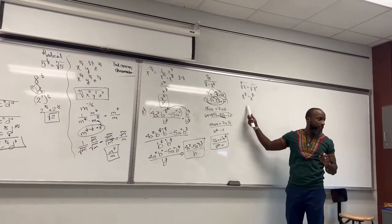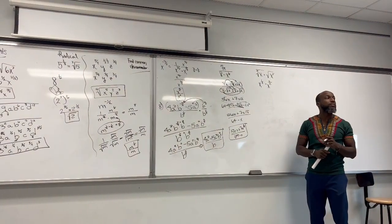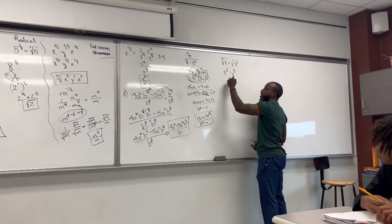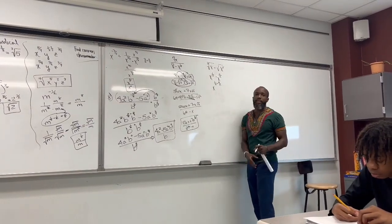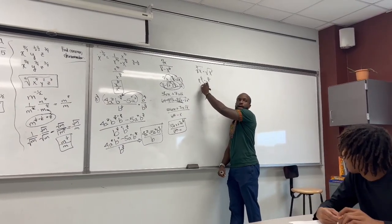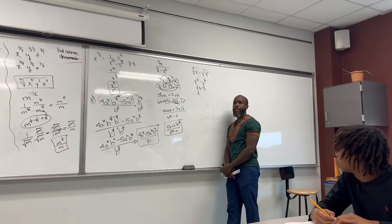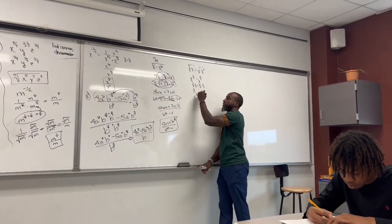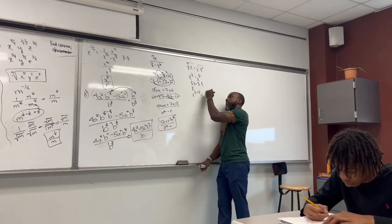We need common denominators. What's the common denominator? It's 6. What would we multiply 1/3 by to get 6? 2. What would we multiply 5/2 by? 3. So it would be x to the 2/6 plus 15/6, which gives us 17/6.